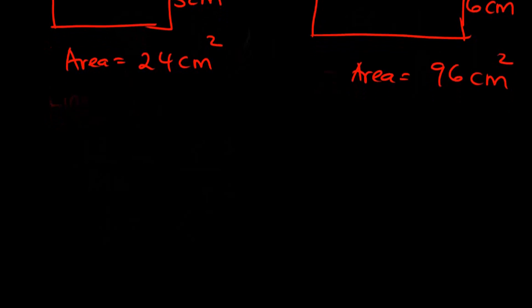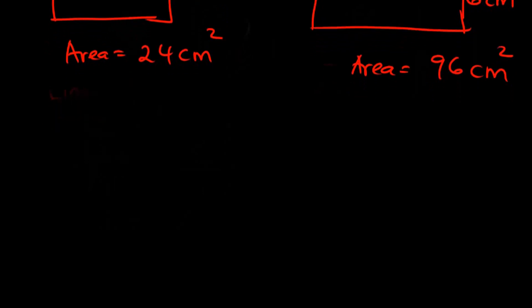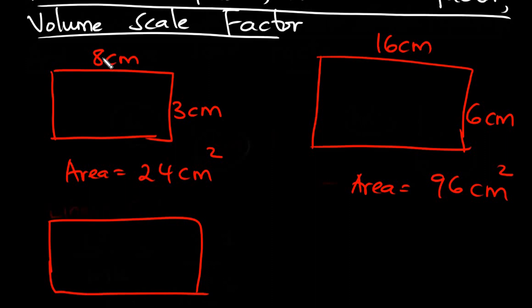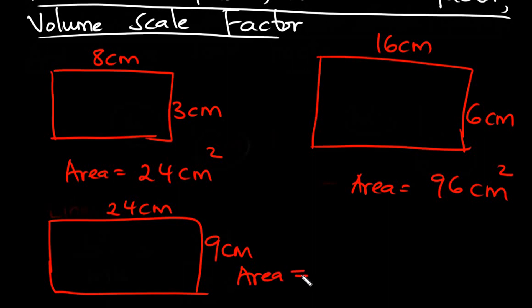16 × 6 is 96 cm². Now, let's multiply these sides by 3. We are going to have another rectangle measuring 8 × 3 = 24 cm and 3 × 3 = 9 cm.